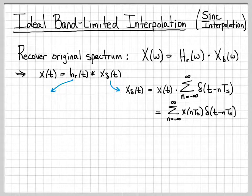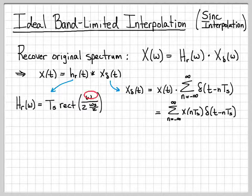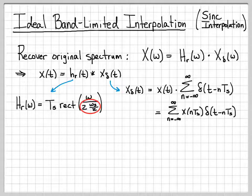What about hr(t) — the impulse response of this ideal low-pass filter? We know hr(ω) is Ts times a rectangle function in frequency, so it's a rectangle in the frequency domain as a function of ω. It has a total width of ωs, going from −ωs/2 to ωs/2. On the denominator I've written it as 2 times ωs/2 — the 2s cancel and it's just ωs — but this form makes it easy to look up in a Fourier transform table.